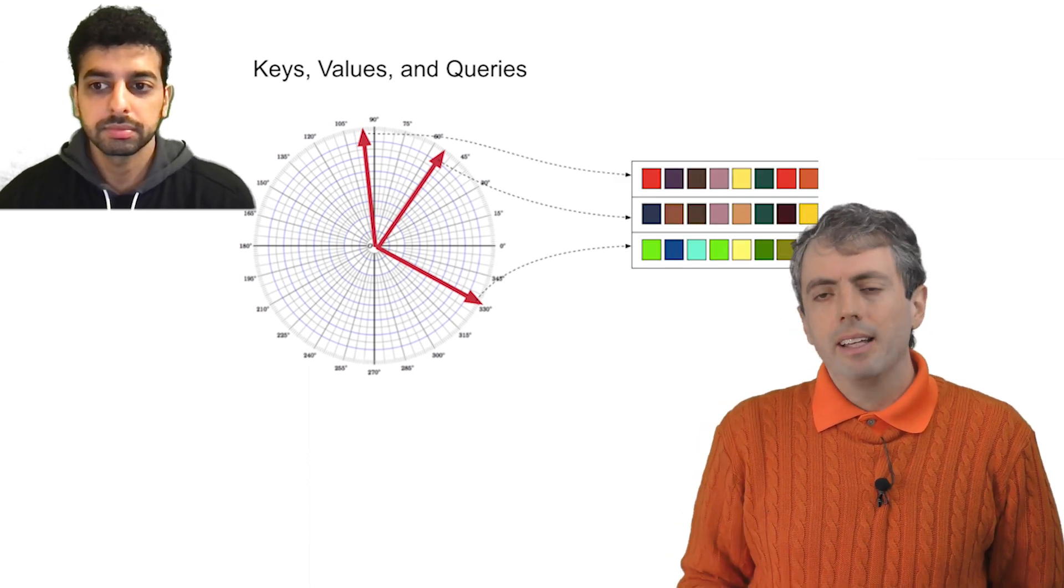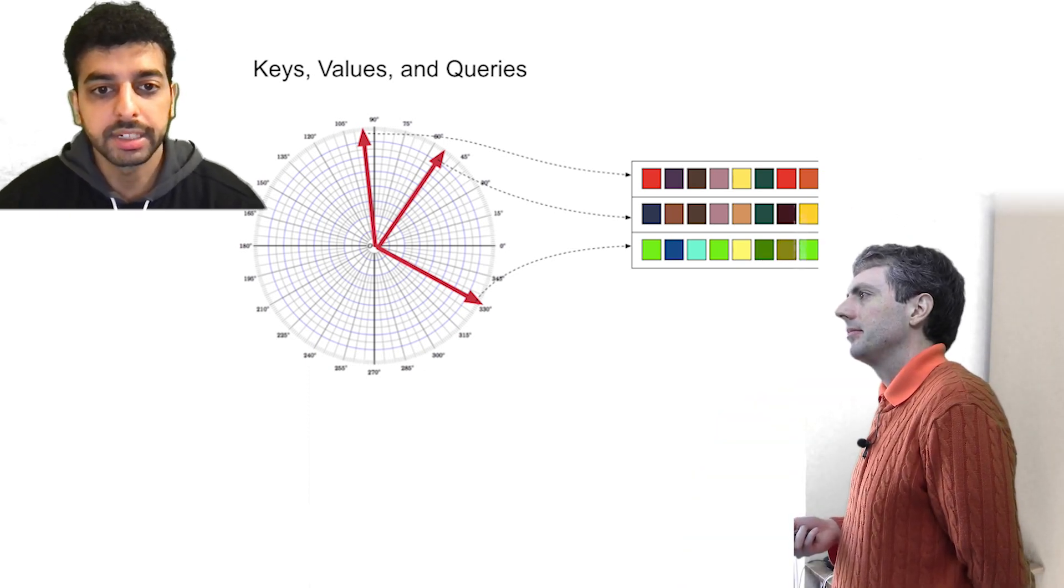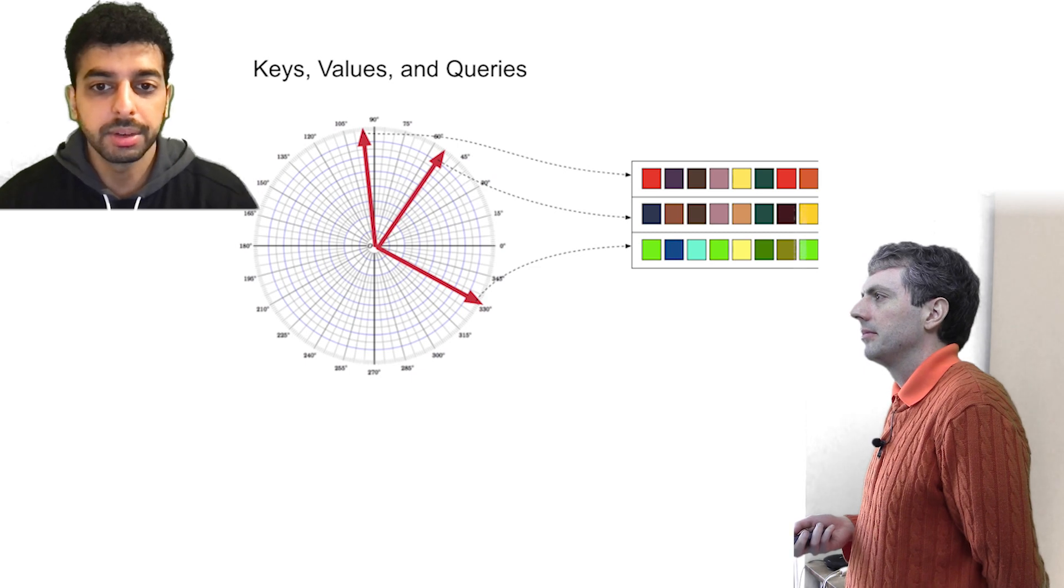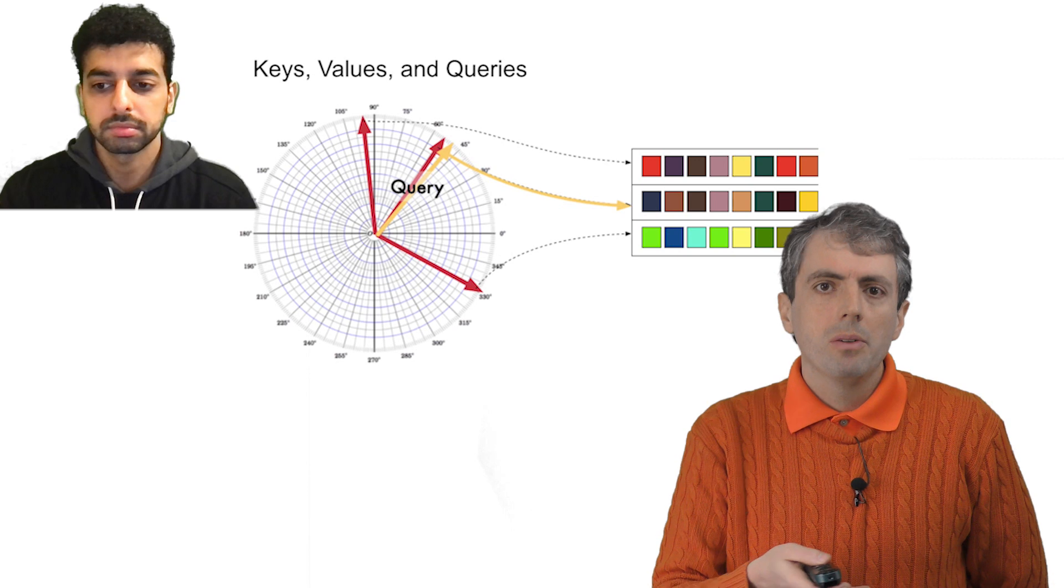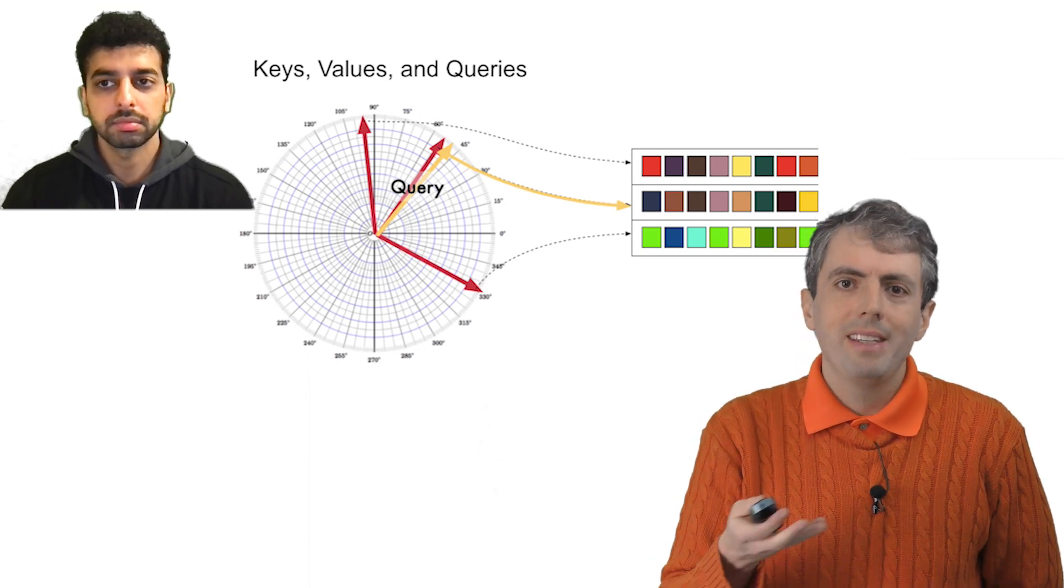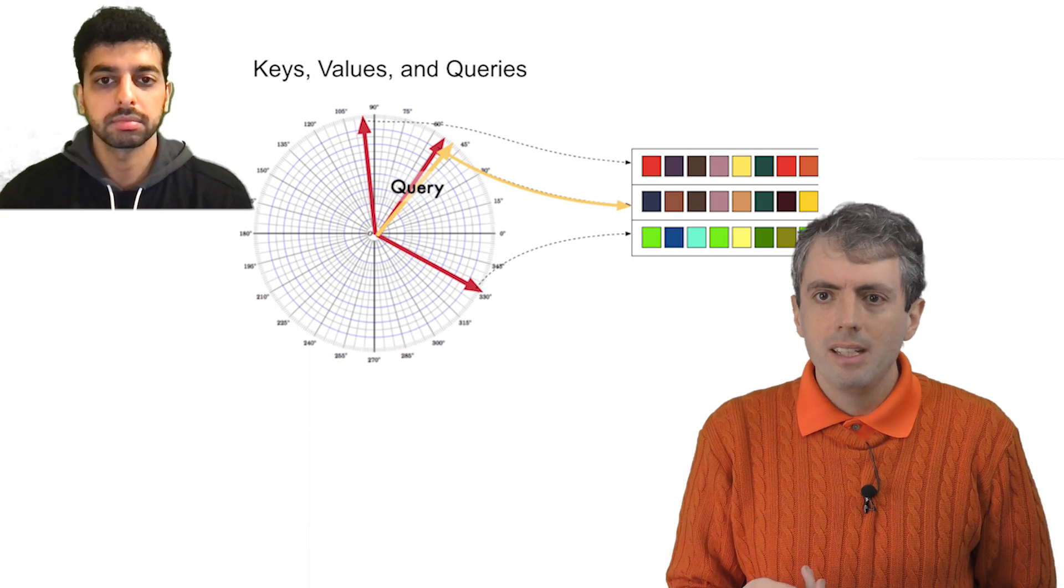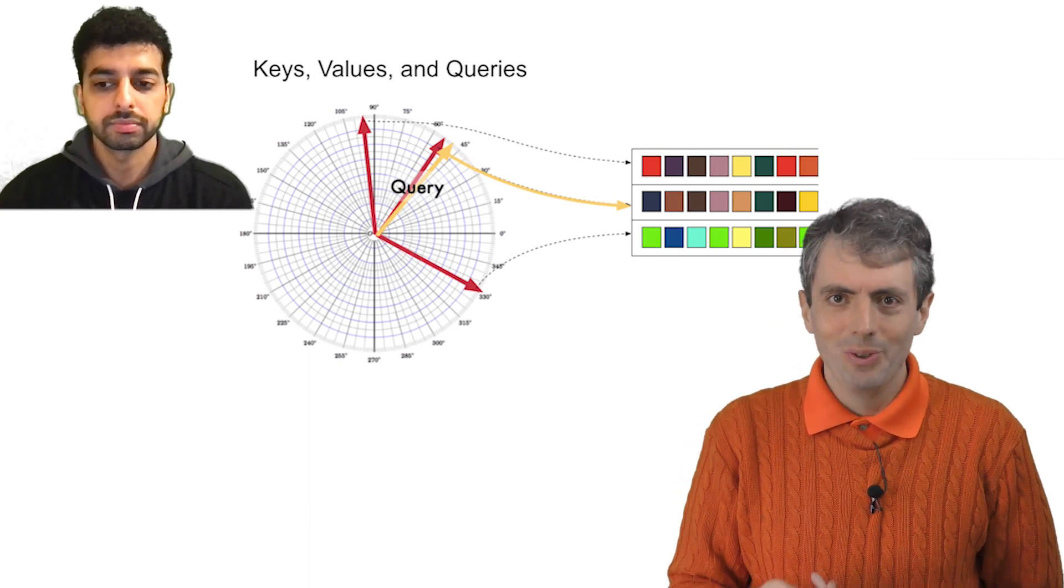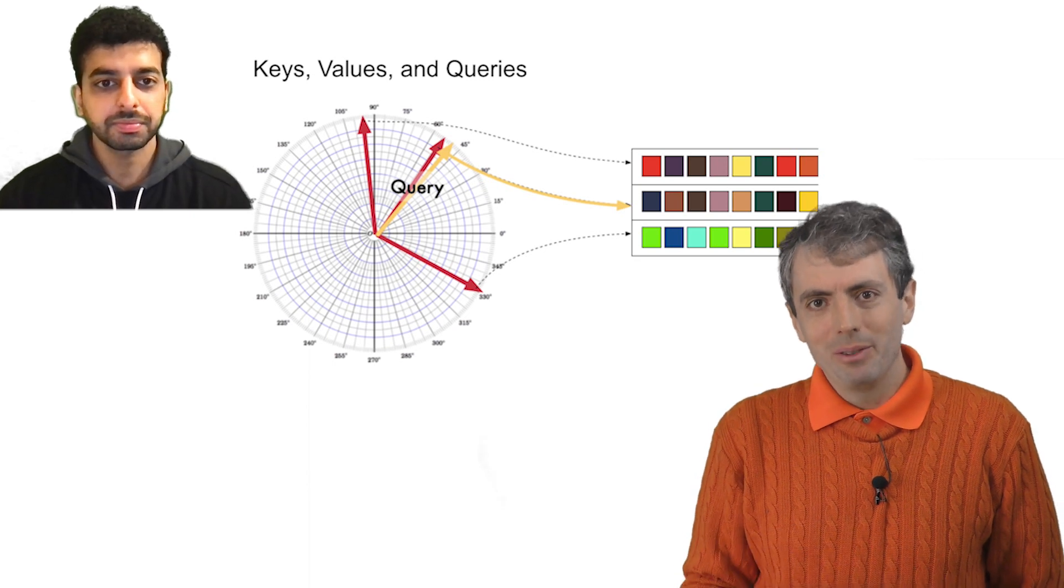But which key gets selected? Both the keys and queries are vectors, so it's the values associated with the key and the value that had the highest dot product with the query. Okay, so to draw this out in 2D, we have these keys. A query comes in. It's closest to key 2. So we look up that value in the table and output value 2.